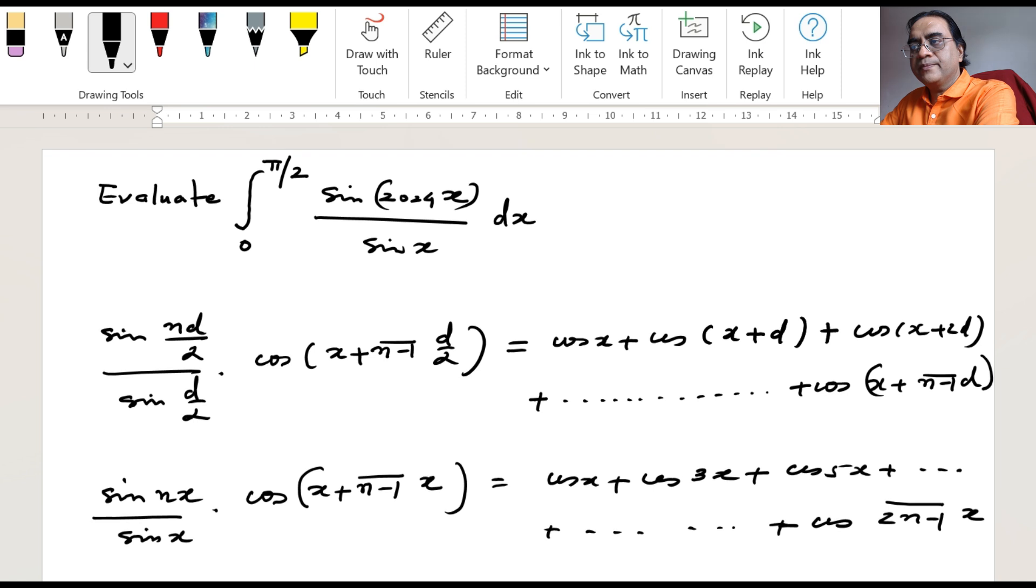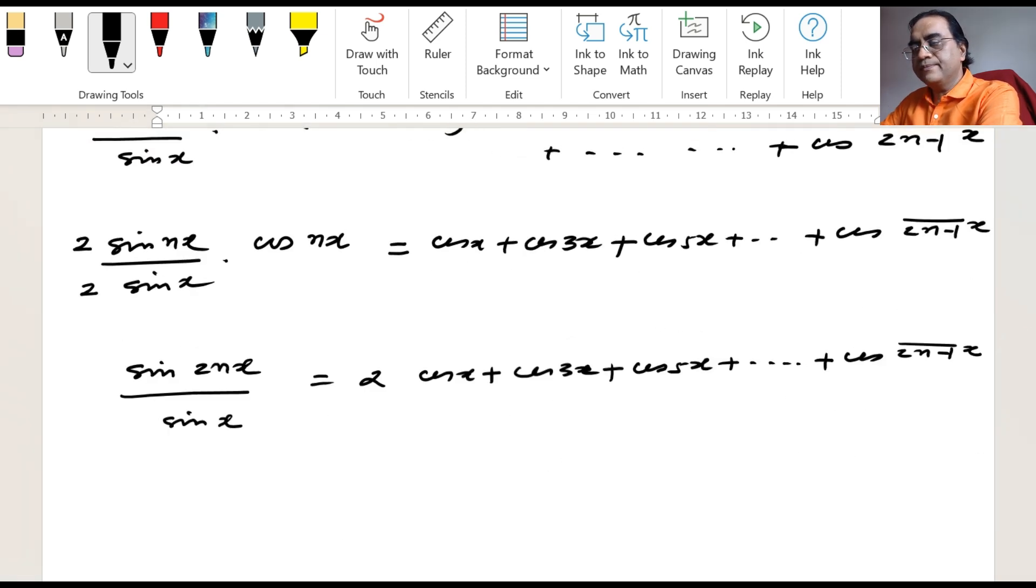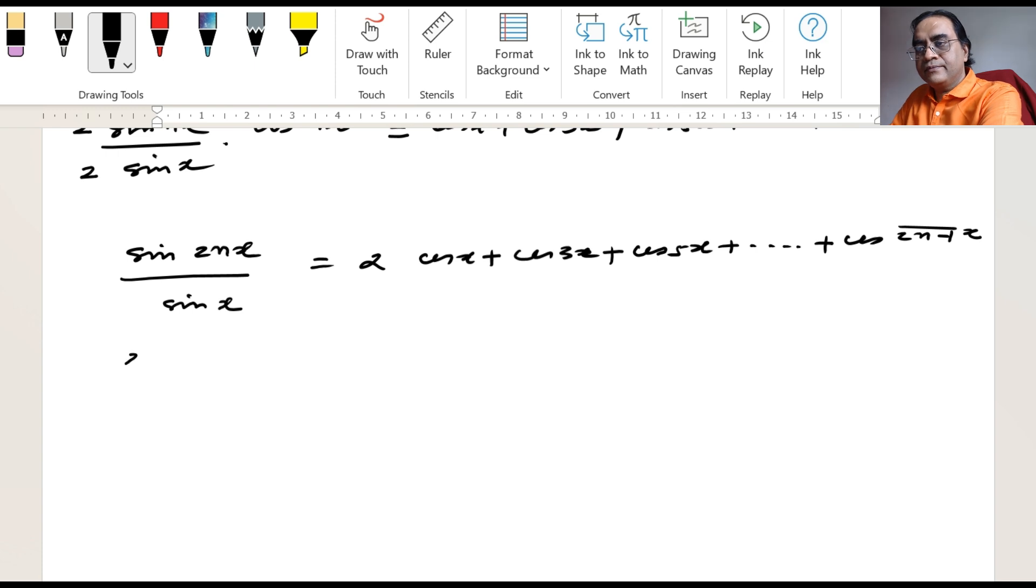Now we want sin 2024 x. So in place of 2n, we can put 2024.